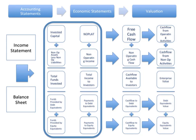We're going to label everything on the balance sheet that's operating as a one, net out all the ones, and that's called invested capital. Then we take all our twos — non-operating assets net of non-operating liabilities — and add ones and twos together to get TFI, total funds available to investors. TFI equals the funds provided by debt holders (threes) and equity holders (fours), and three plus four will also add up to TFI.